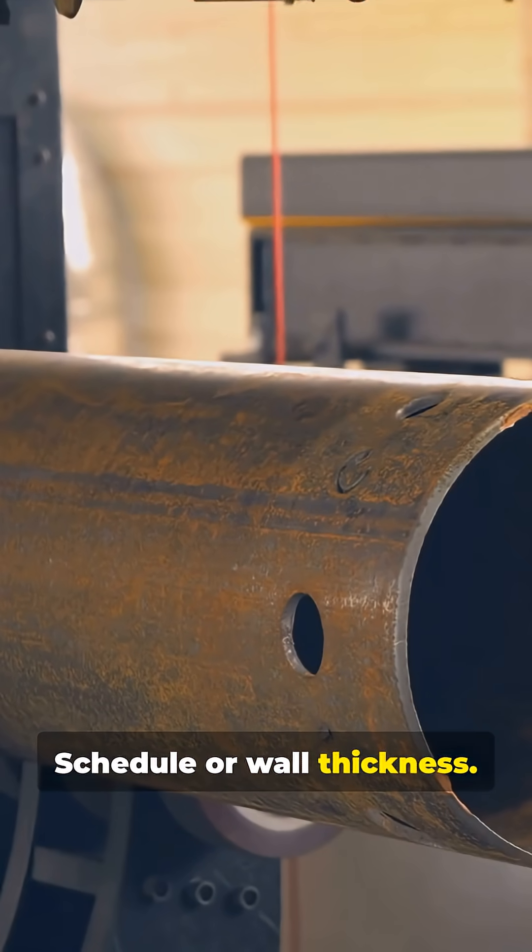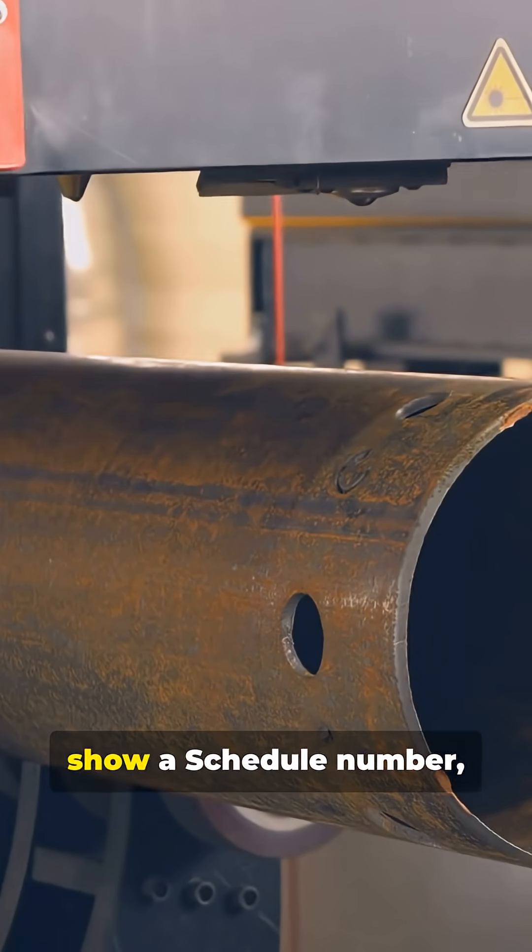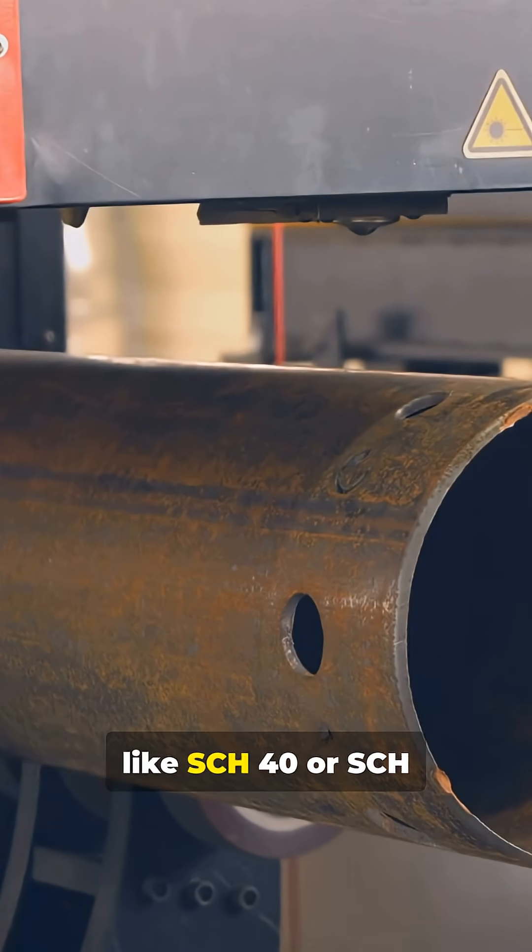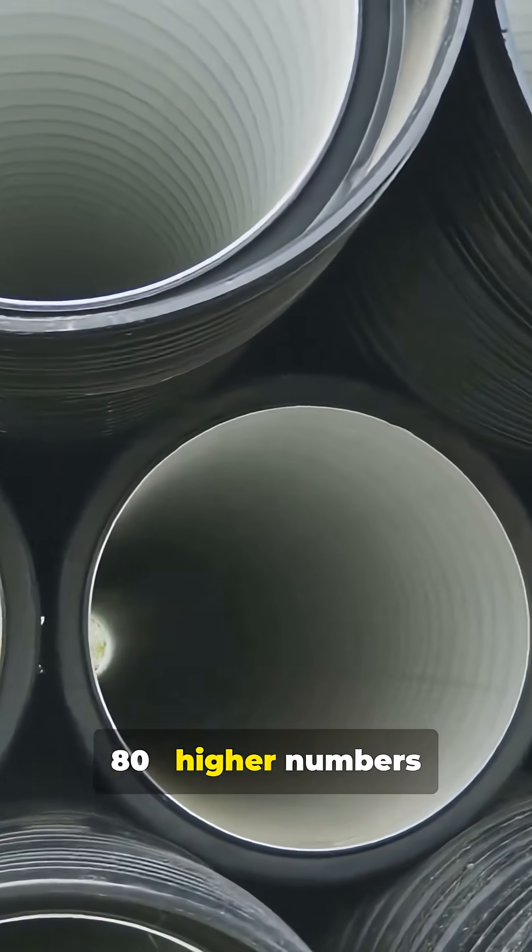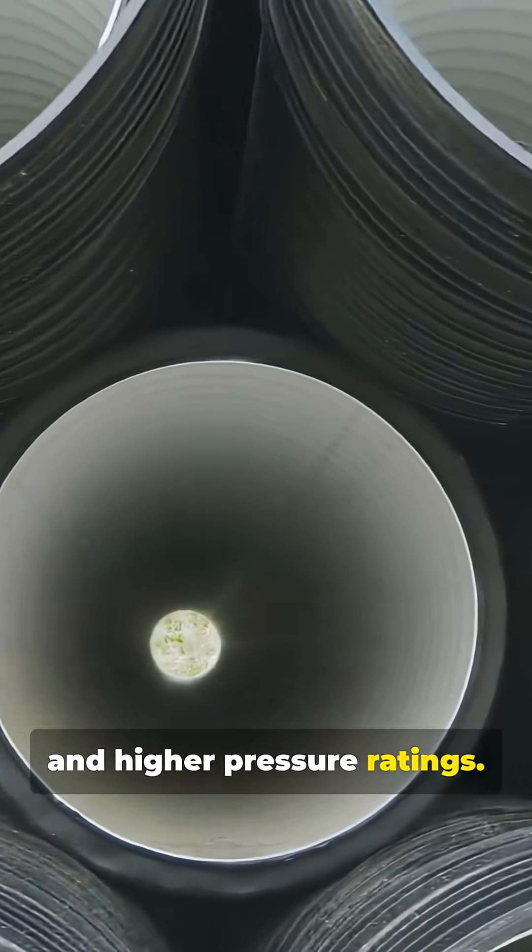Schedule or wall thickness. PVC and CPVC often show a schedule number, like SCH-40 or SCH-80. Higher numbers mean thicker walls and higher pressure ratings.